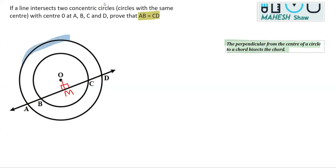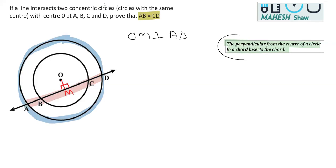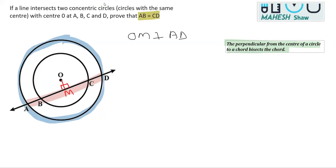First, consider the outer circle. We take AD as a chord of this circle. Since OM is perpendicular to AD, and a perpendicular drawn from the center bisects the chord, we get AM = DM. We mark this as Equation 1.